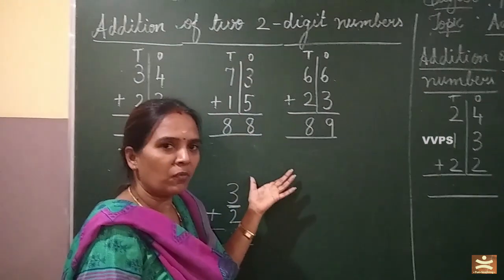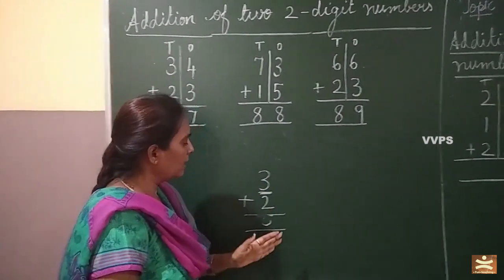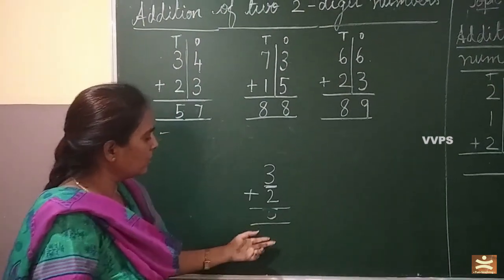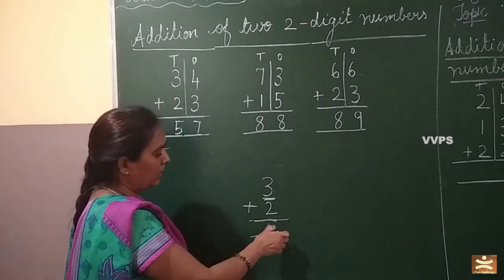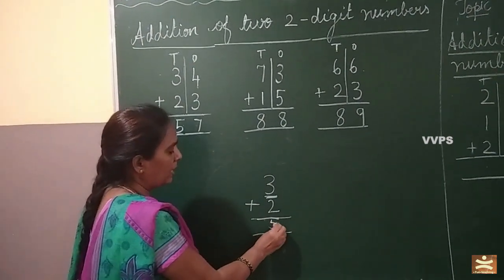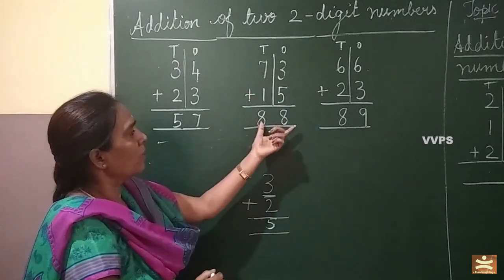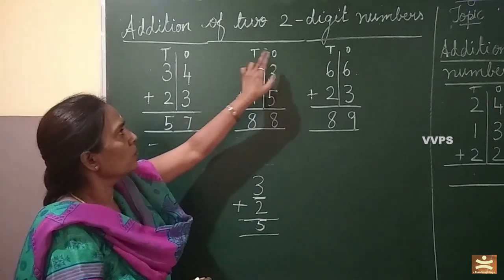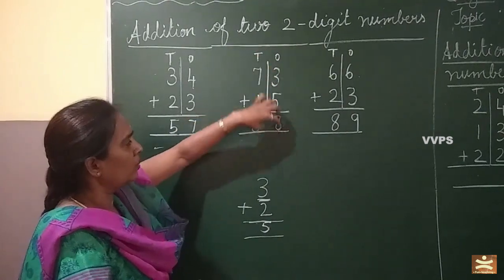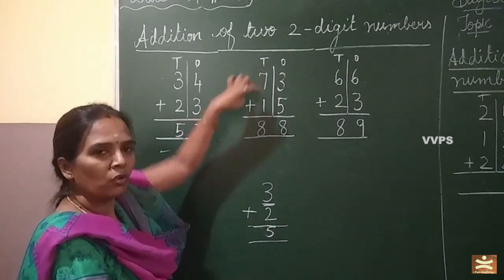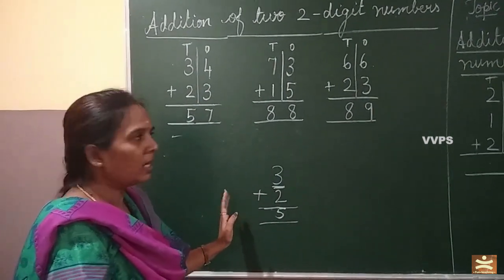Understood children? Same way — there is no difference. One only thing: here with one digit number you will be writing one. Same thing. When you are writing a two digit number, one digit goes in one space and the other in ten space, and exactly below there you have to write. That is it children.